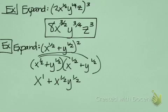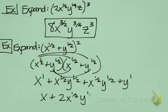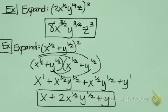Then we multiply x to the 1 half times y to the 1 half, and again x to the 1 half times y to the 1 half, and then y to the 1 half times y to the 1 half is y. So when we combine like terms, we get x plus 2x to the 1 half, y to the 1 half, plus y.